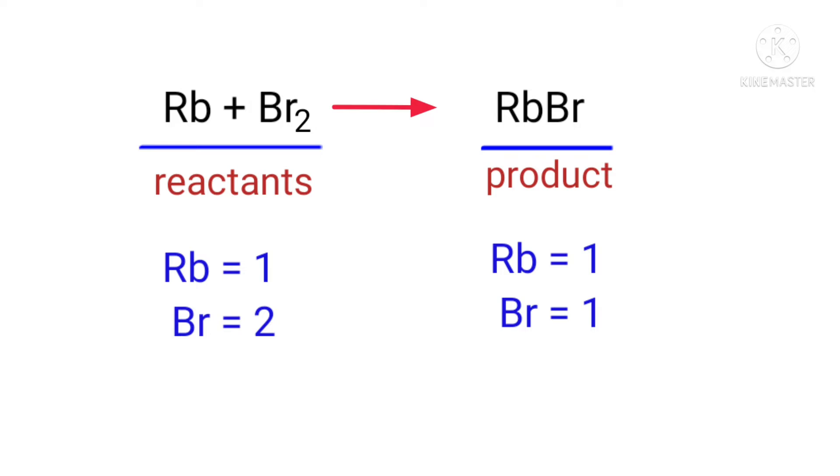If you look at this equation, the equation is not balanced. In the reactants side, there are one Rubidium atom and two Bromine atoms present. On the product side, there are one Rubidium atom and one Bromine atom present. The number of atoms are not balanced on both sides.